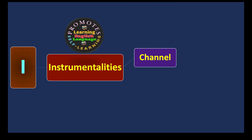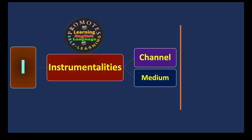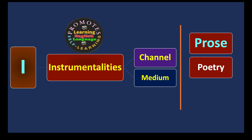I stands for Instrumentalities, referring to channel or medium — through what you want to communicate and express. This includes prose style, poetic style or poetry, dramatic form or drama, and storytelling. There are different ways and means — channels or mediums — through which we communicate, whether as a speaker, writer, poet, teacher, or student.